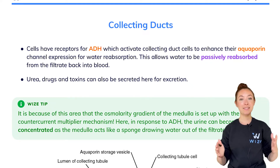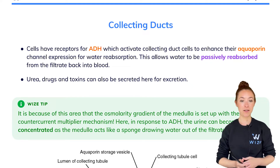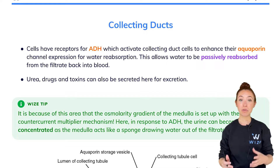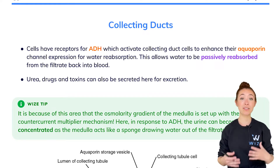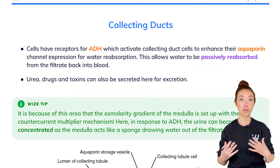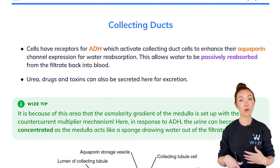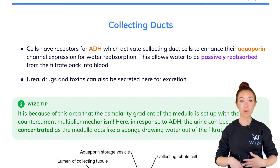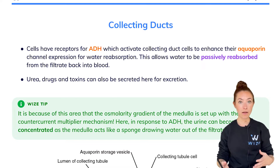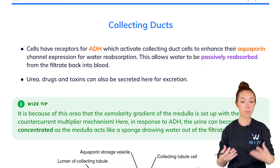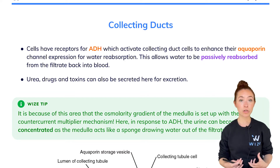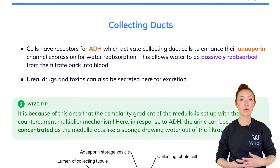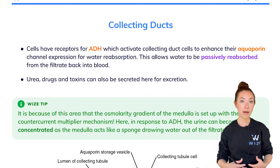We finally reach the last section of the nephron: the collecting ducts. This part is really important because this is where we're able to really concentrate urine. Remember a few lessons ago when I talked about how you don't have to drink gallons of water every day — your body is able to extract as much water as possible from the filtrate if we're in need of it. This is where that magic happens.